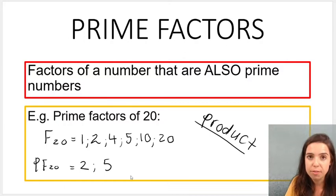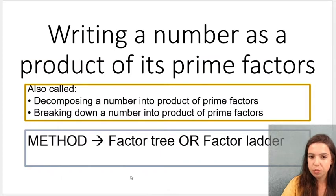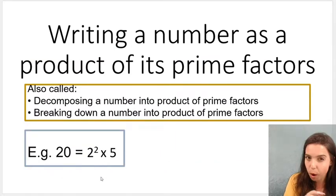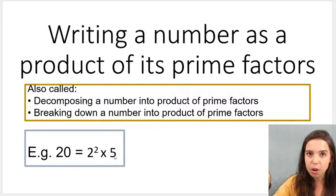Well, products of prime factors utilizes the prime factors, but there's a slight little twist. Here is 20 written as a product of its prime factors: 2 to the power of 2 times 5.